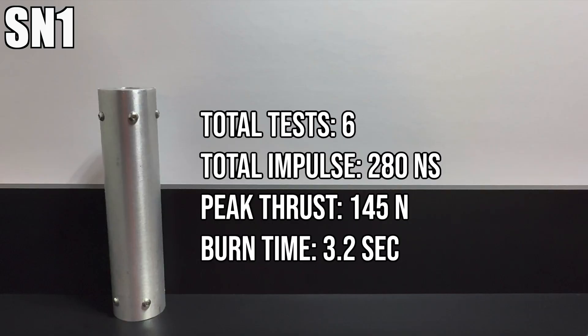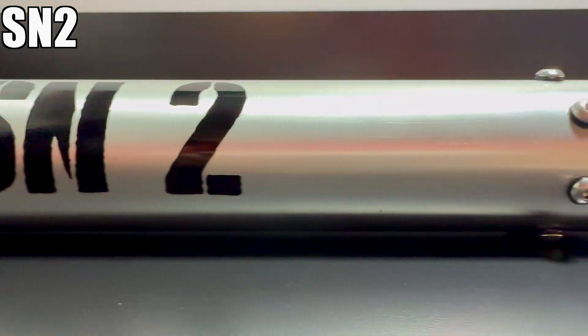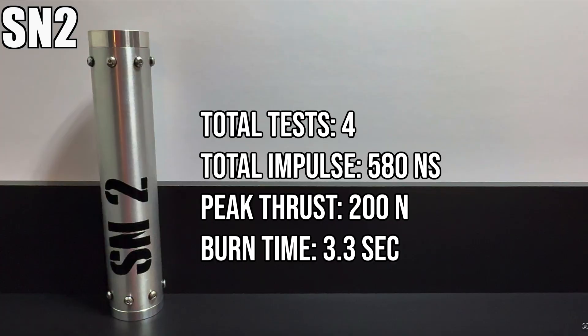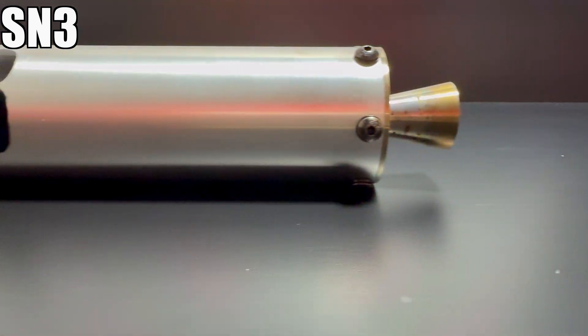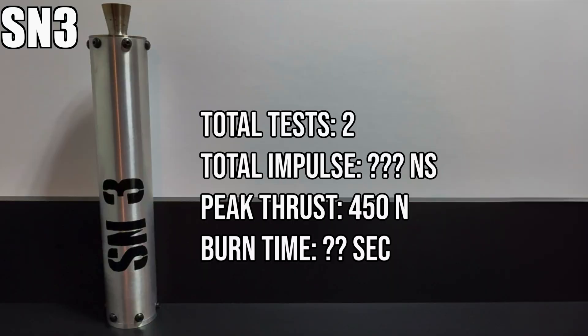SN1 was tested a total of 6 times with the first firing on March 25th and the last on August 20th. It achieved an average total impulse of 280 Ns and a peak thrust of 145 Ns during its test series. SN2 completed a total of 4 test fires beginning on September 21st and ending on October 26th. It delivered an average total impulse of 580 Ns and a peak thrust of 200 Ns, showcasing its significant improvements over SN1. SN3 has performed two static fires so far, with the first on November 24th and the most recent on December 7th. Due to SN3's failure, we do not have too much reliable data.